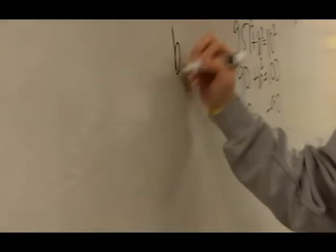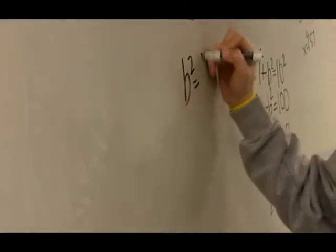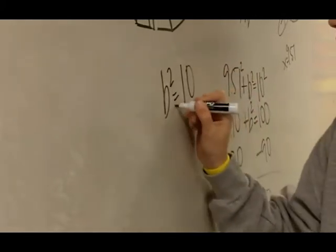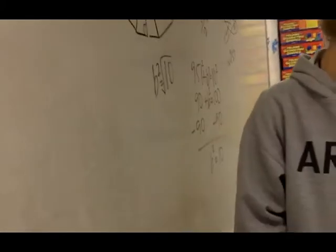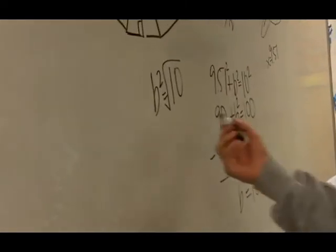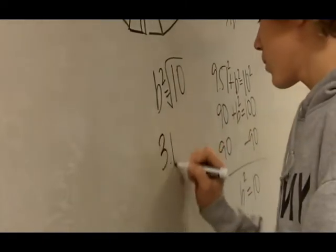And then we have B squared, and we want to know what the square root of this is. Square root of 10 is 3.16, so we have 3.16.